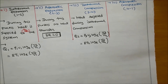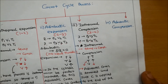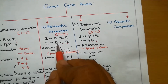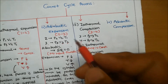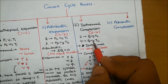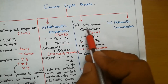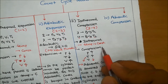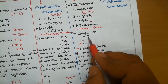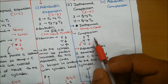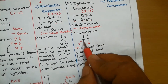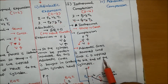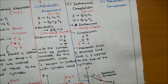The isothermal compression process takes place from point 3 to point 4. At point 3, pressure is P3, volume is V3, and temperature is T2. Isothermal means temperature remains constant. In compression, pressure and temperature increase and volume decreases. But since this is isothermal compression, temperature must remain constant. The adiabatic cover is removed and a heat sink is applied to the end of the cylinder, so heat is rejected during this process.